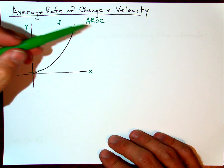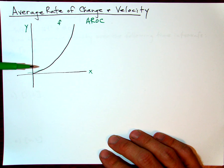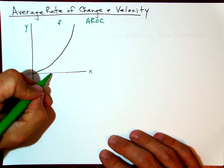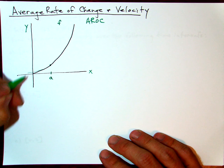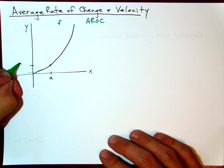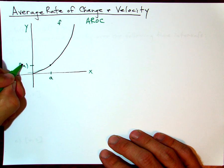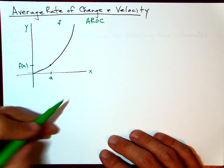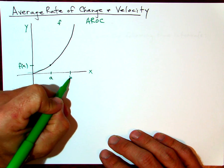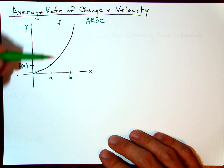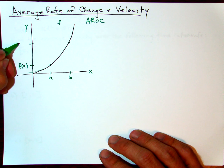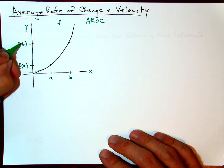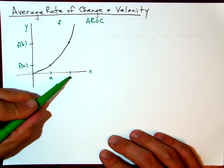What I mean by average rate of change is if we assume that the rate of change is constant between two points. For example, we can let this be point a, so right here on the curve this would be f of a — the function value associated with a. And over here, we call this point b, so the point on the curve is f of b, the function value associated with that x value.